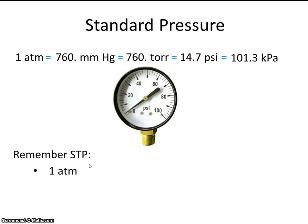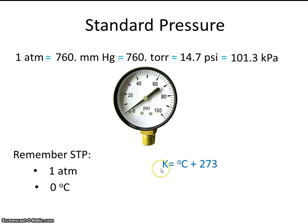You probably recall that standard temperature is 0 degrees Celsius. However, we're not going to be using Celsius this unit — everything has to be converted to Kelvin. The formula for that gives us: 0 degrees Celsius plus 273, so standard temperature in Kelvin is 273 K. These will be some numbers to memorize.